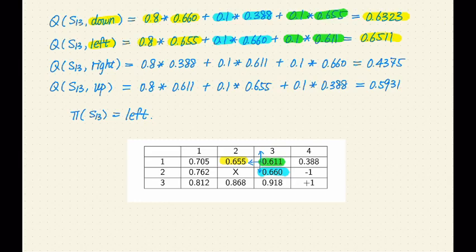And then for the optimal policy, we can simply look at the four numbers and choose the action that gives us the largest number. In this case, that's left.